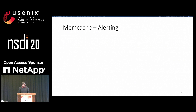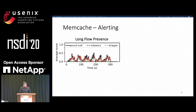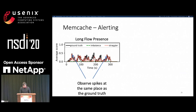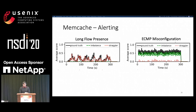We also showcase the traffic pattern scores by demonstrating how they can help answer important questions like: is my network performing poorly due to load imbalance or stragglers? The first case is the presence of a long flow. We hand-labeled the ground truth data for comparison, plotted the rolling average of matching between each signature and trace, and observed spikes at the same place as the ground truth. Next is ECMP misconfiguration—we again hand-labeled the data as the ground truth, and we see the imbalance signature matching scores closer to the ground truth as expected.